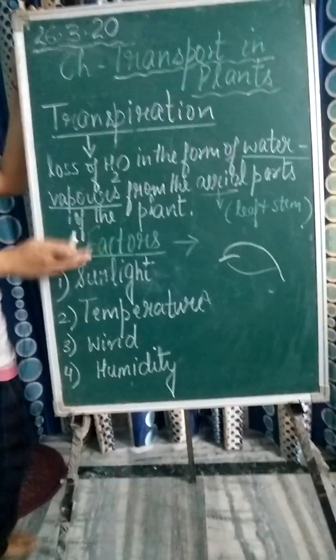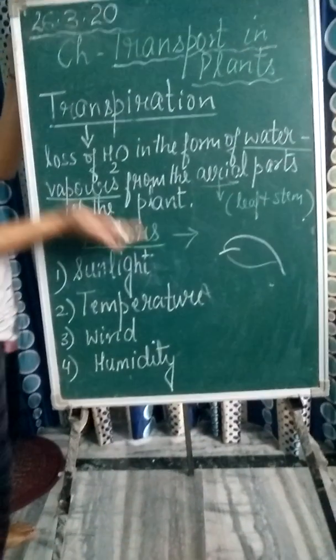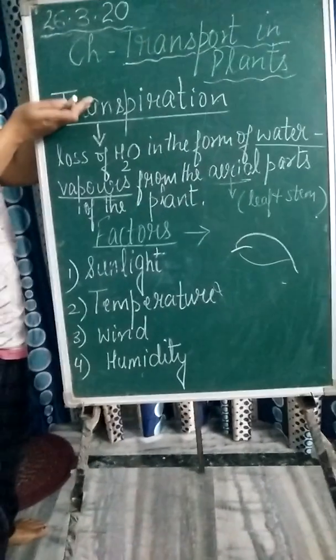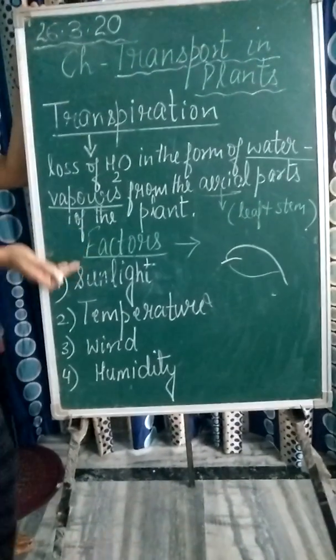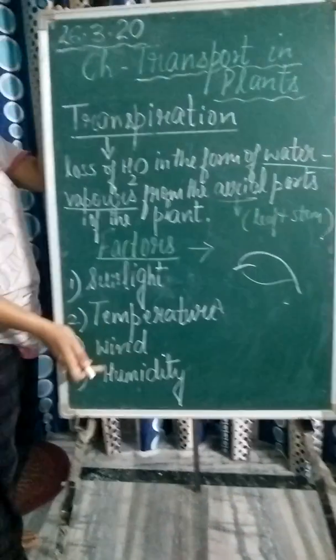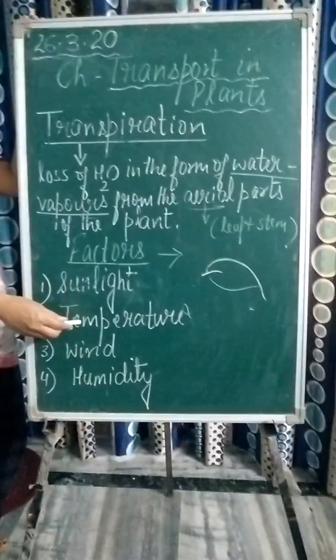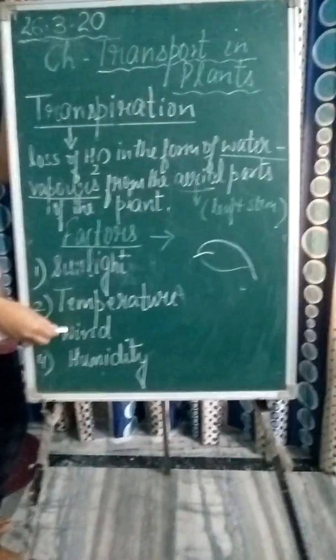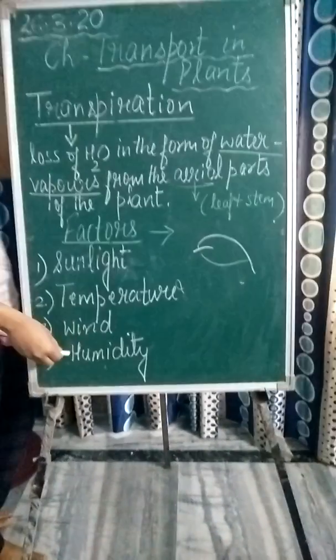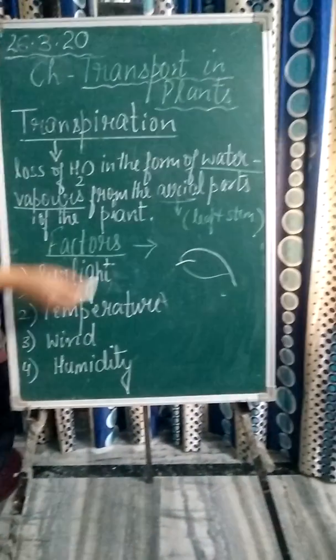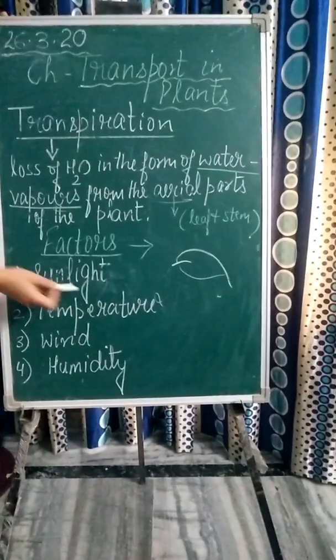Now let us discuss what are the various factors which affect the rate of transpiration. There are four factors given in your chapter: sunlight, temperature, wind, and humidity. Let us study in detail.